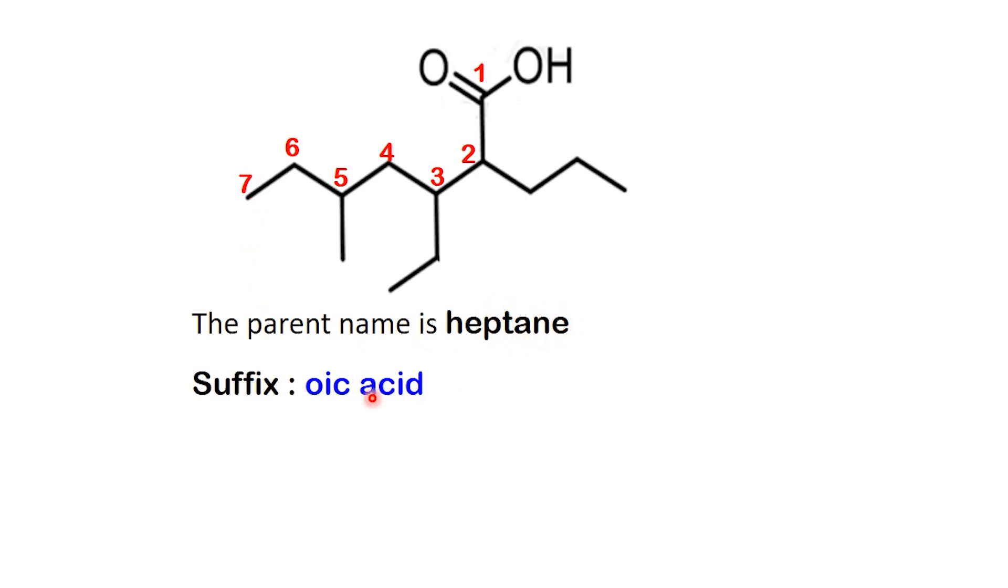Changing the ending, it becomes heptanoic acid. Now, let's examine the branches. On carbon 2, there's a propyl group. On carbon 3, we see an ethyl group. On carbon 5, there's a methyl group.